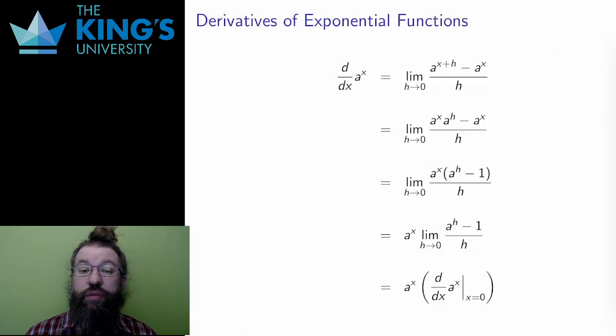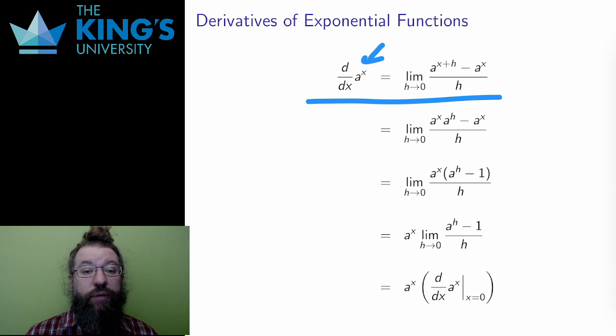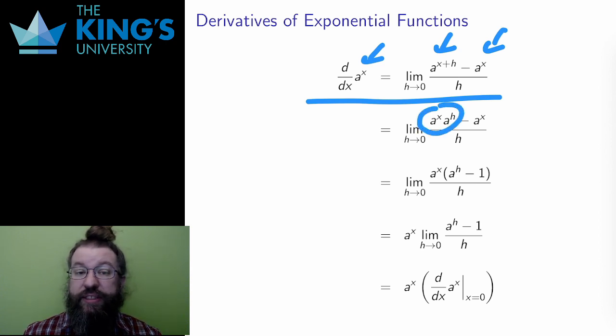Here is the limit definition for the derivative applied to an exponential function with arbitrary base a. I take the limit of f of x, which is now f of x plus h, which is a to the x plus h, minus f of x, which is a to the x, and that's over h in the limit as h goes to zero. Now I can do some algebra with the exponent. The sum of exponents is the same as the product of the bases. But then, I can factor a to the x out of the entire numerator.